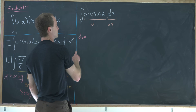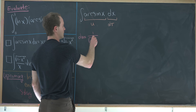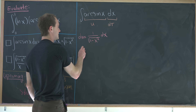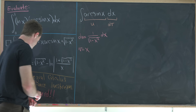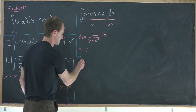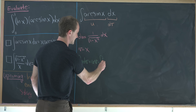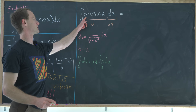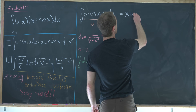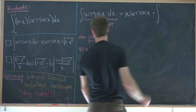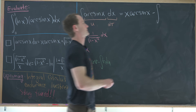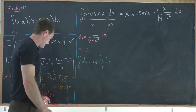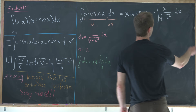From this setup, du is the derivative of arc sine, which is one over the square root of one minus x squared, dx. Since dv is dx, v is equal to x. Using the integration by parts formula — integral of u dv equals u·v minus integral of v·du — we write this as x times arc sine of x, minus the integral of x over the square root of one minus x squared dx.